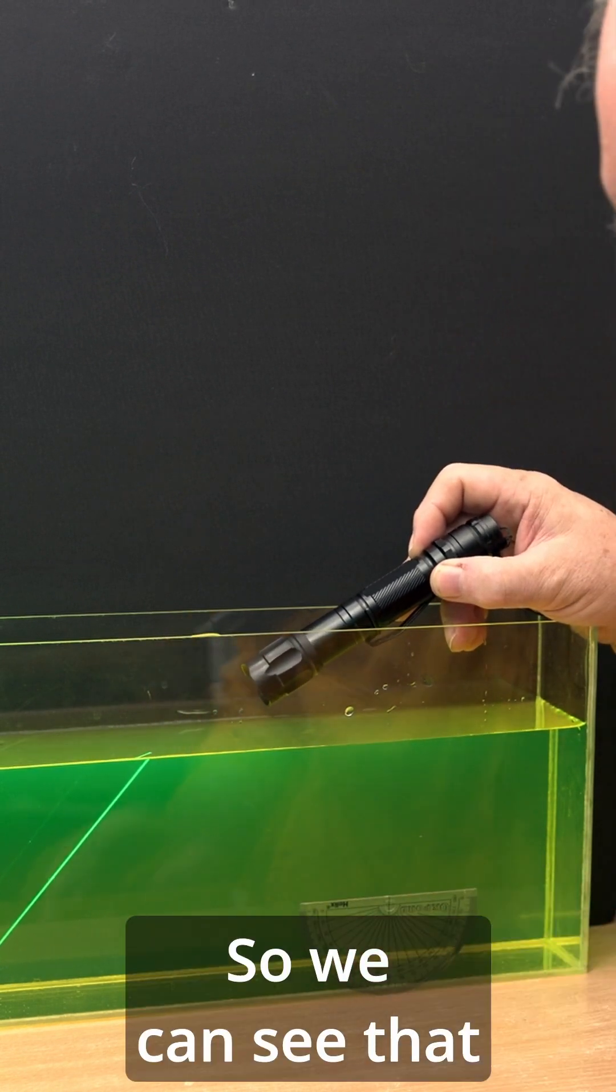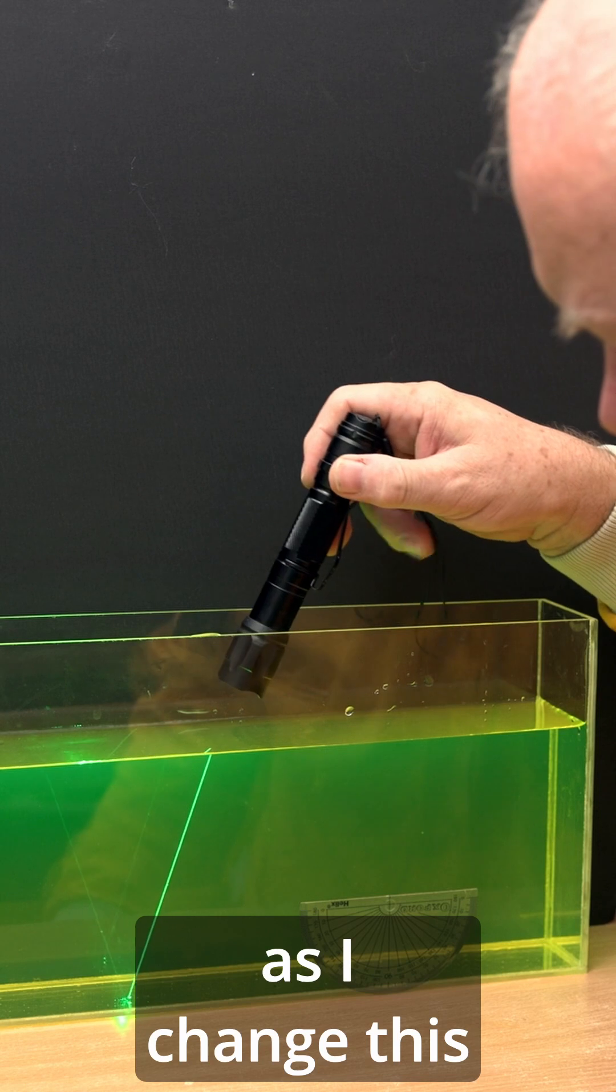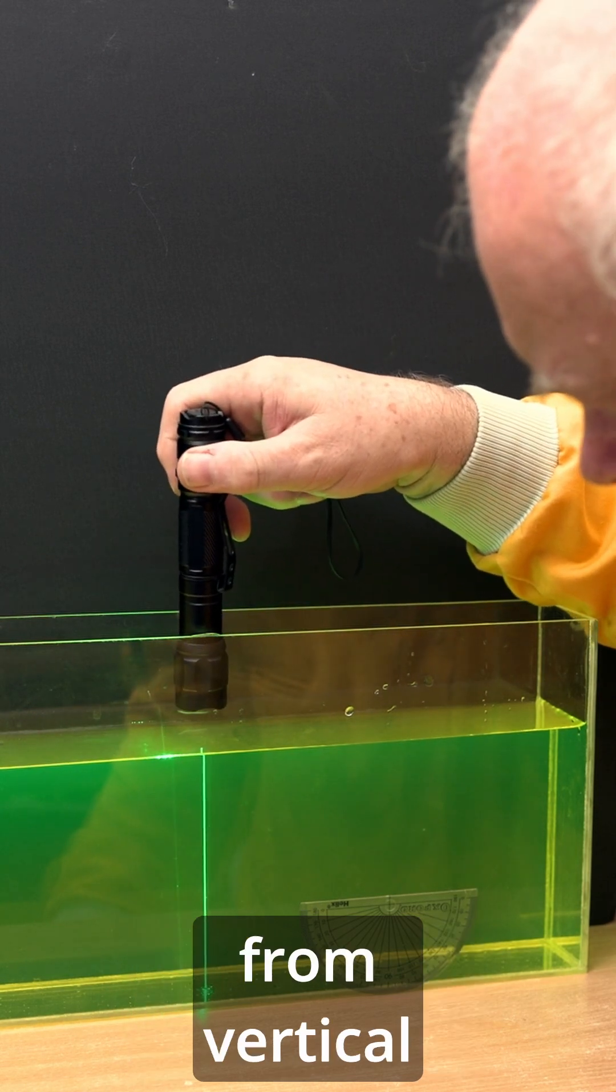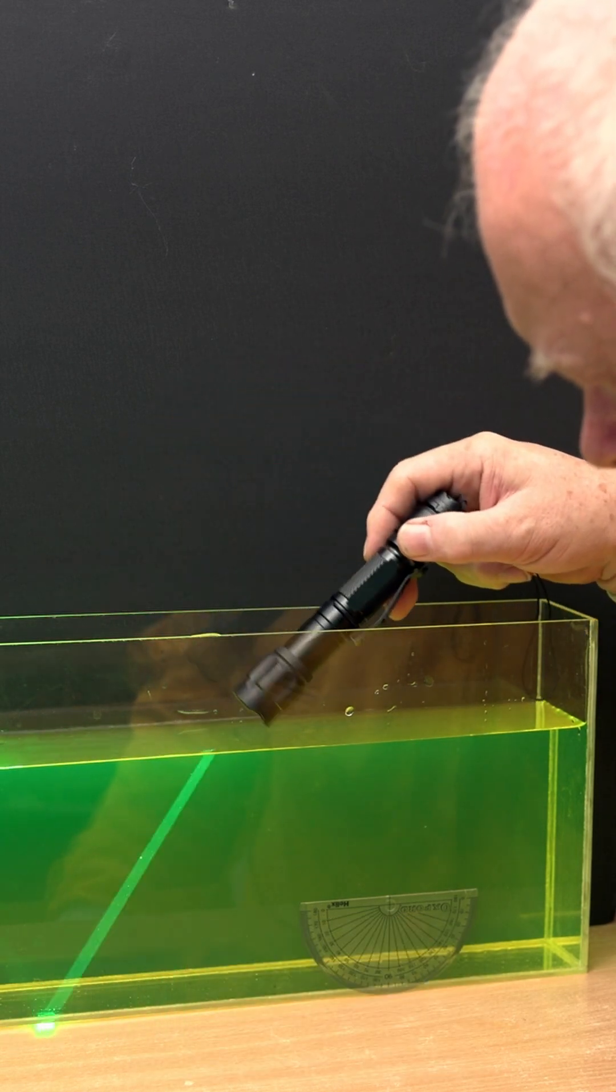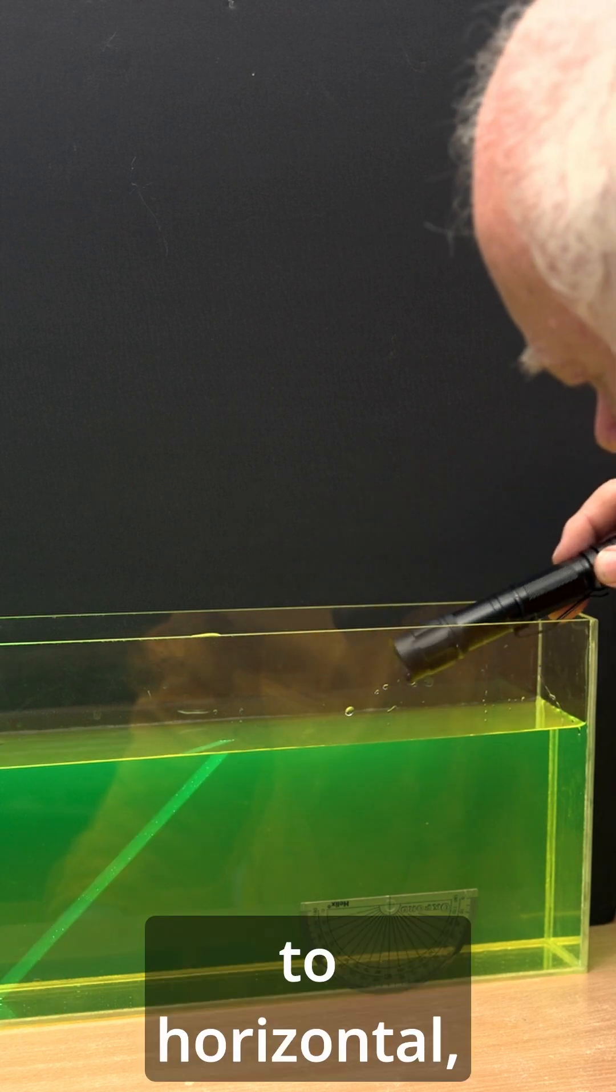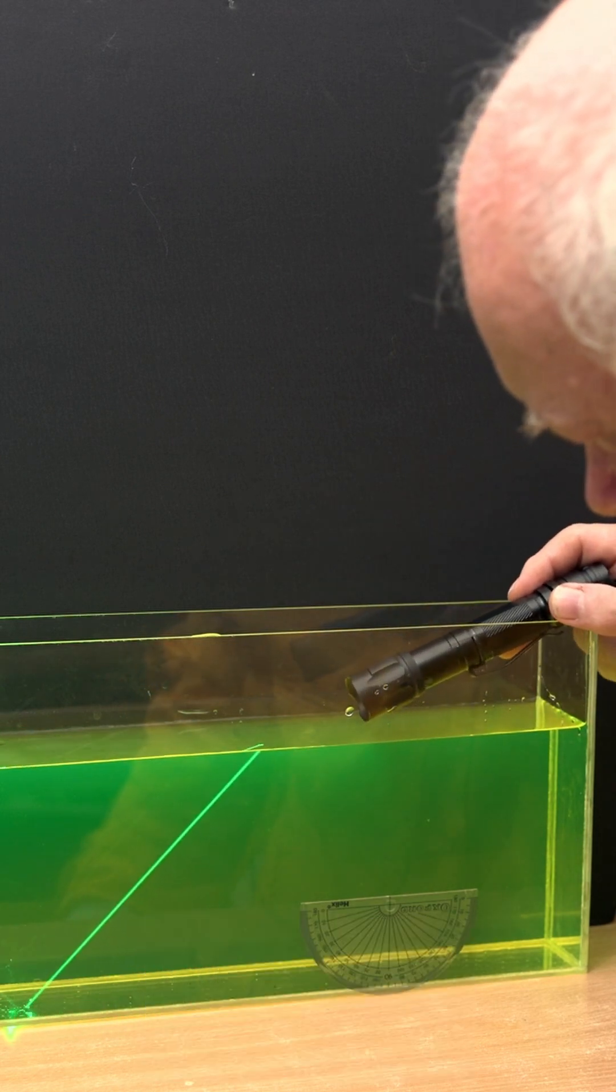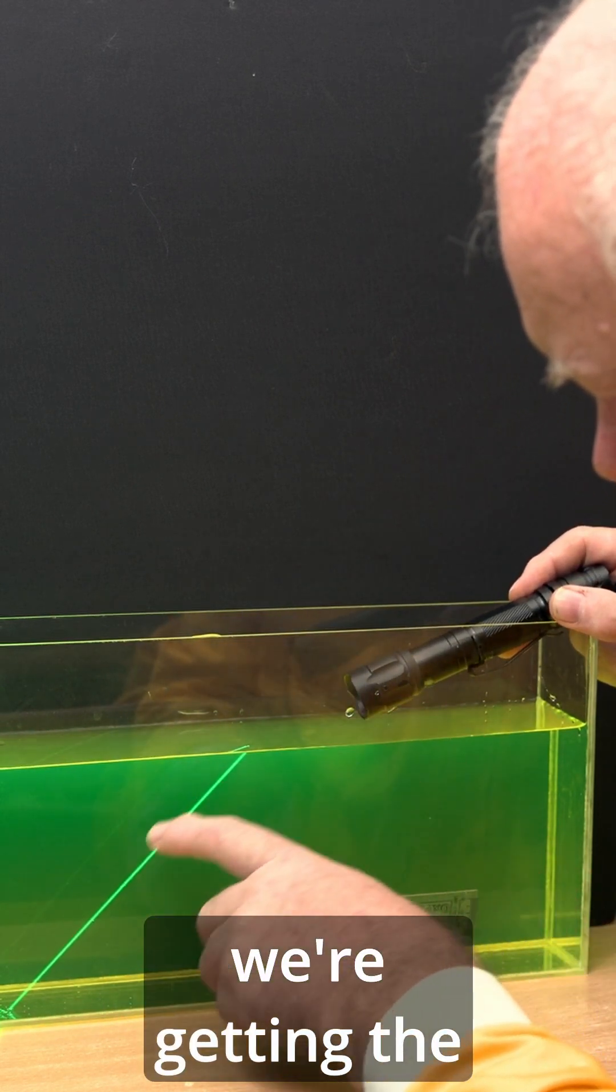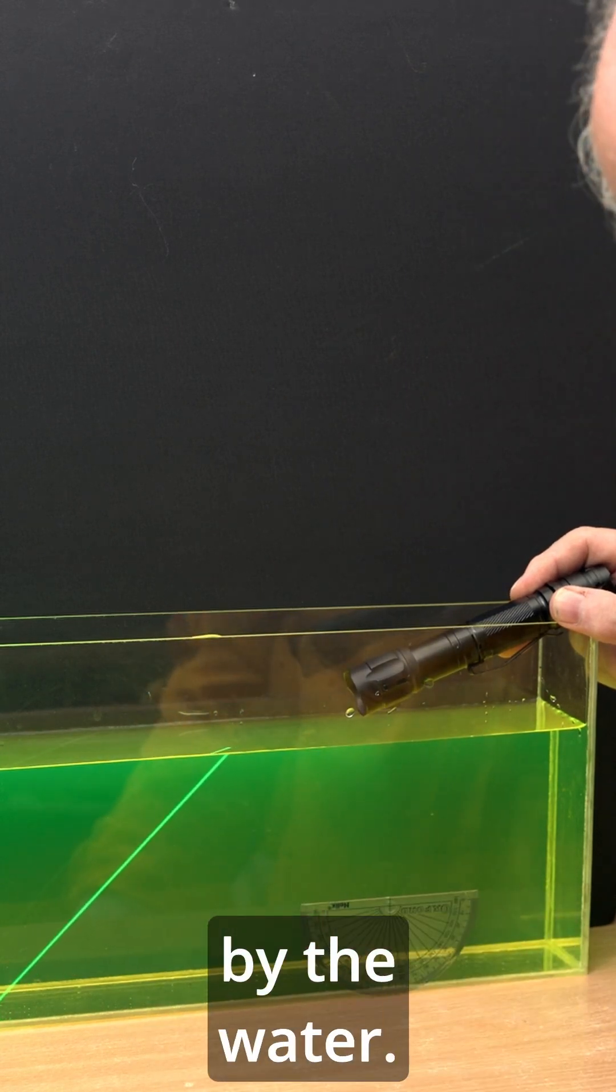So we can see that as I change this from vertical to a more horizontal, we're getting the light bent by the water.